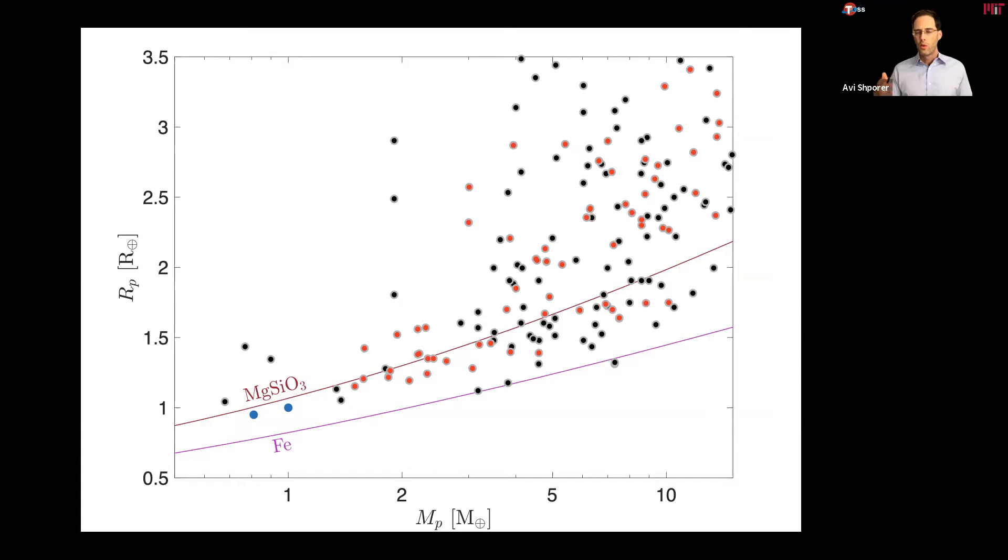But TESS can do also other things. For example, we are discovering some supernovae, the violent explosions of stars at the end of their lives, of massive stars at the end of their lives, when for a short period of time, they outshine the galaxy they reside in.